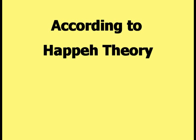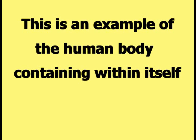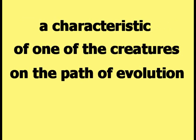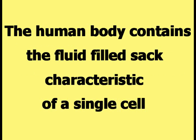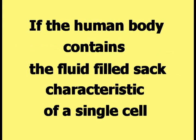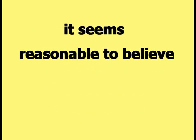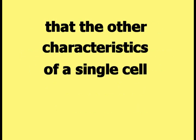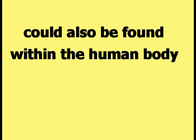According to Happy Theory, this is an example of the human body containing within itself a characteristic of one of the creatures on the path of evolution. The human body contains the fluid-filled sac characteristic of a single cell. If so, it seems reasonable to believe that other characteristics of a single cell could also be found within the human body.